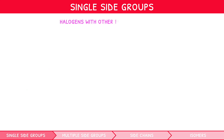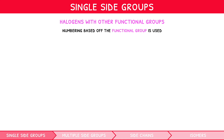But what if we were naming a halogen side group on an alkene, alcohol, carboxylic acid, aldehyde, ketone, ether or ester? Well, the same rules apply, except you must remember that the initial numbering of the carbon chain, with reference to the functional group, is used to determine the numbering of the side group.